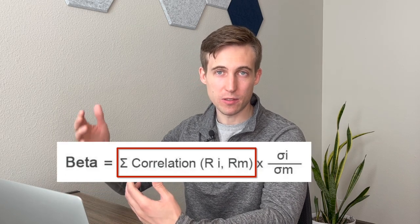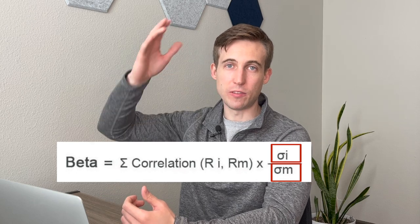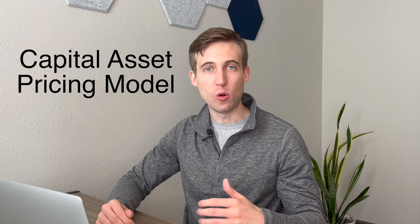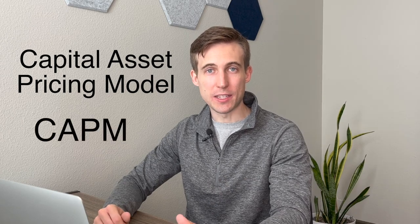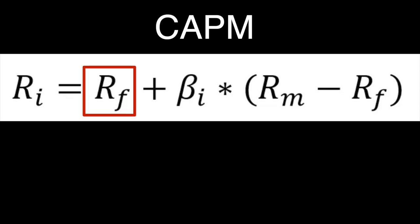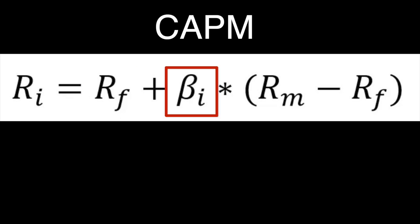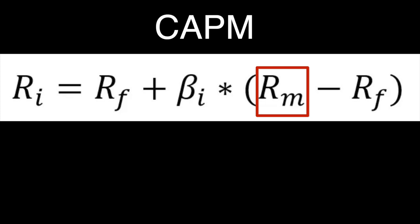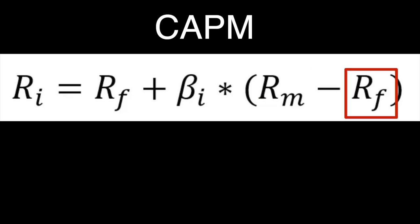For example, if the correlation between the stock and the market is 0.9, the standard deviation of the stock is 2.8, and the standard deviation of the market is 1.5, plugging those numbers in gives a beta of 1.68 — a high-beta stock similar to Nvidia. The correlation tells us how similarly the price moves happen, and the standard deviation tells us the level of those price moves. To predict the expected value of a stock, we can use the Capital Asset Pricing Model, or CAPM.